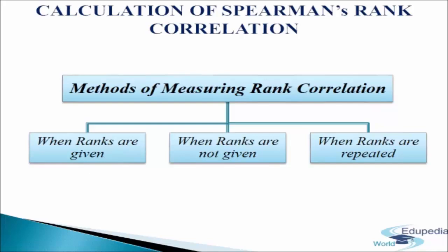In this method, ranks are assigned to values of the variables for the purpose of analysis. This method provides a measure of linear association between ranks assigned to individuals or objects according to the quality of the attributes. The coefficient of correlation is denoted by rk. The value of rk is interpreted in the same way as Karl Pearson's coefficient of correlation — its value ranges between plus one and minus one. Rank correlation is equal to product moment correlation between the ranks.